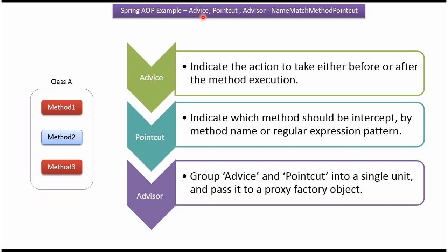In this video tutorial I will explain what is Advice, PointCut, and Advisor in Spring AOP. Advice indicates what action we need to take either before or after the method execution. PointCut indicates which method we should intercept by method name or regular expression pattern. Advisor means grouping the Advice and PointCut into a single unit and passing the Advisor to a ProxyFactory object.